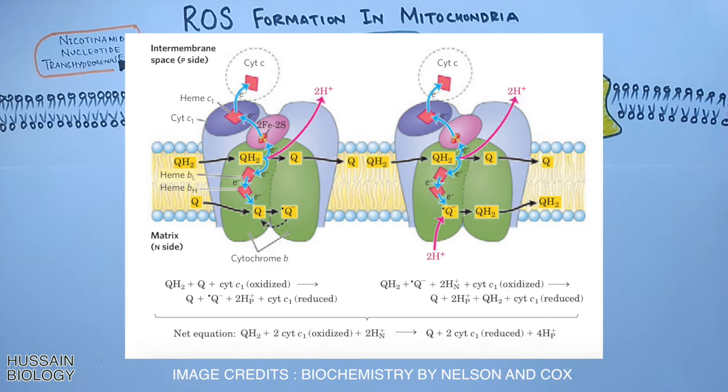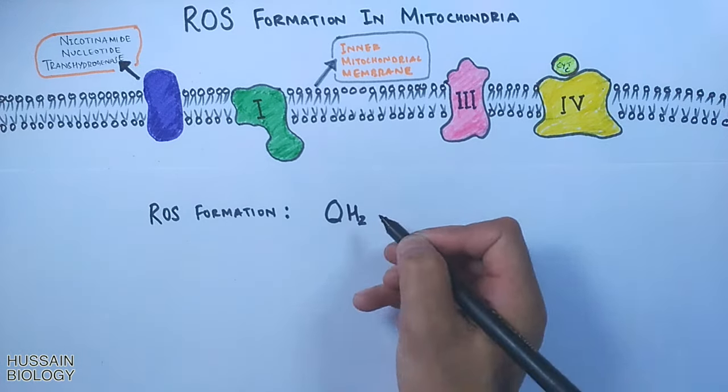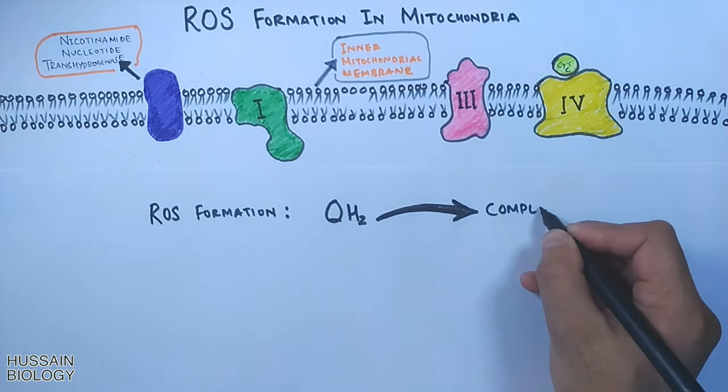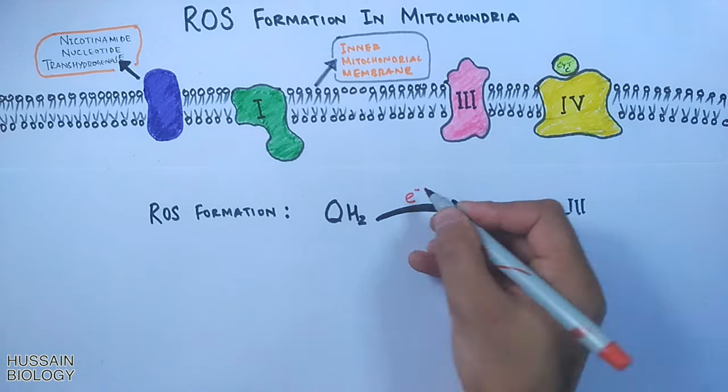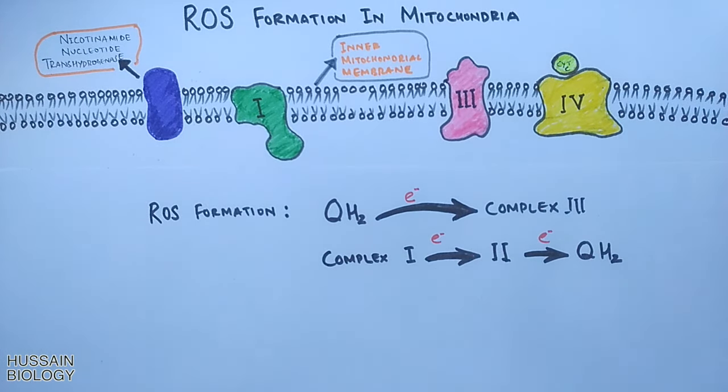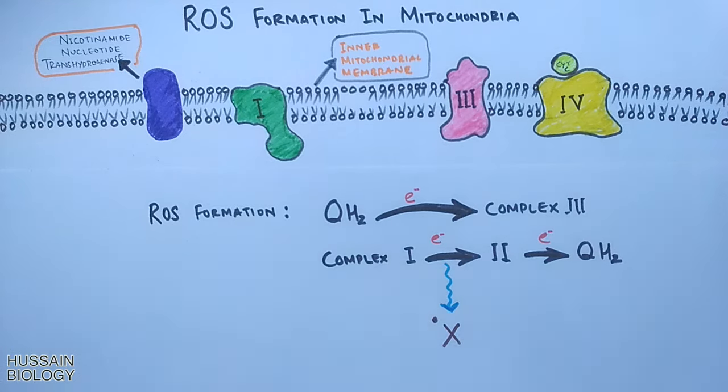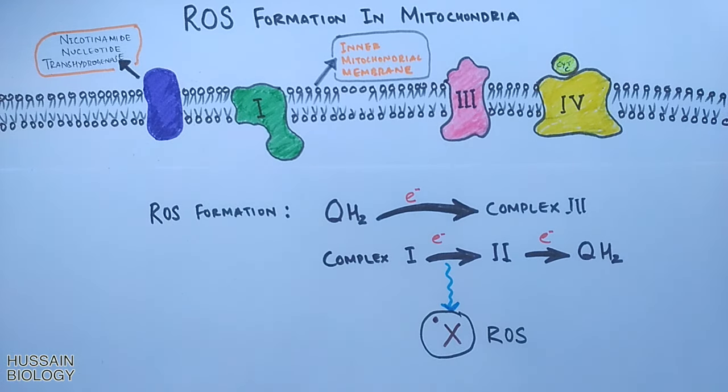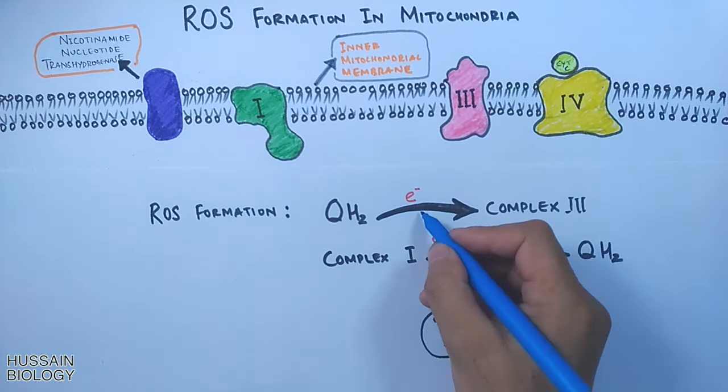Here in this diagram we can see the Q cycle precisely. ROS formation takes place during the transfer of electrons from QH2 (dihydroquinone) to complex three, or ROS is generated during the transfer from complex one to QH2. So basically it is during the Q cycle we get the reactive oxygen species which has an extra electron in its structure.